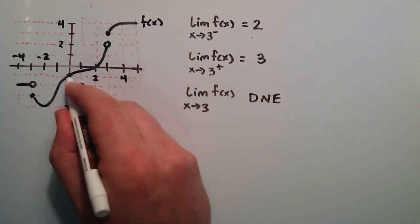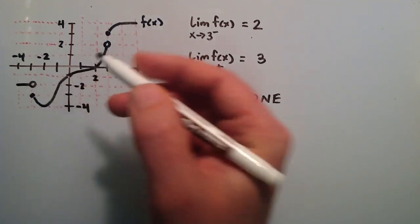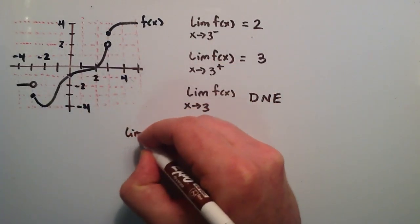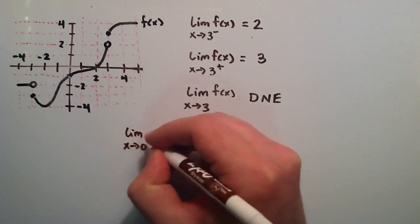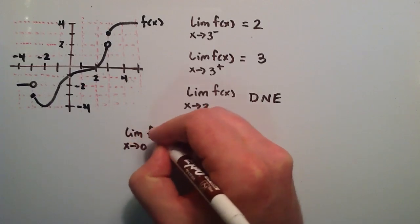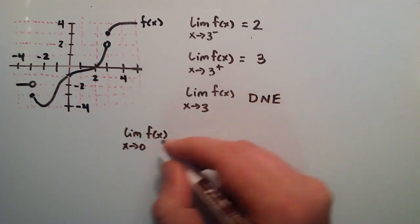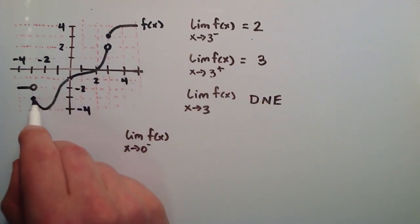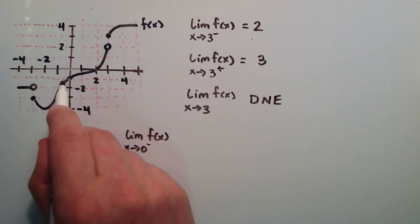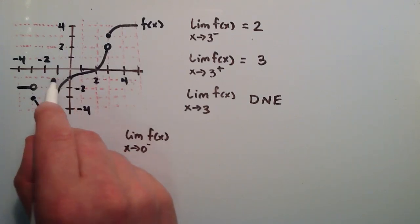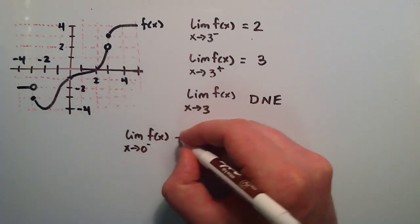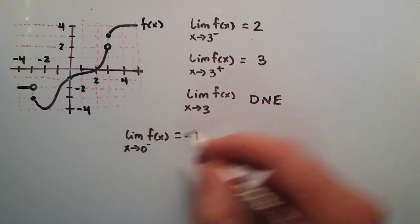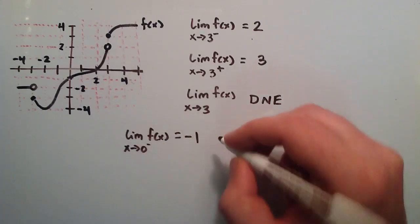If we look at this point here, this is the limit as x approaches 0. Taking the limit of f of x as x approaches 0 from the left, it looks like we're going to get a corresponding f of 0 value equal to negative 1. So the limit exists from the left-hand side.